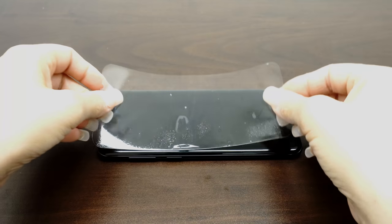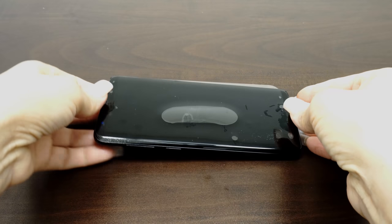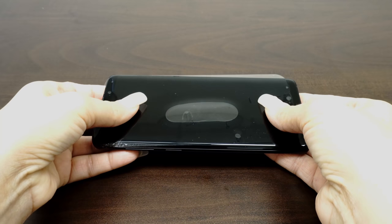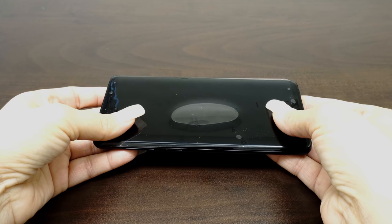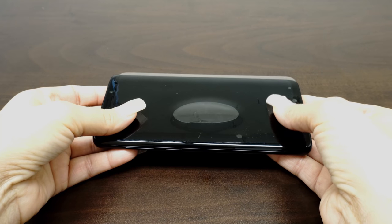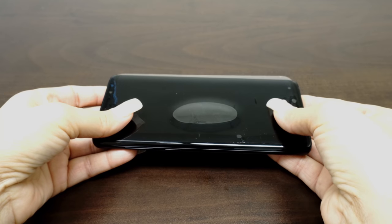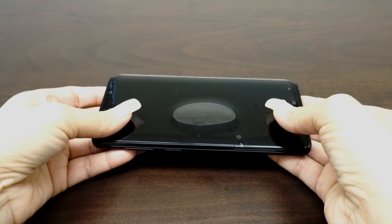Carefully place your IQ Shield on your device's screen. The installation solution acts as a lubricant that allows your screen protector to move around with ease. If the screen does not move easily, carefully peel it off and apply more solution.